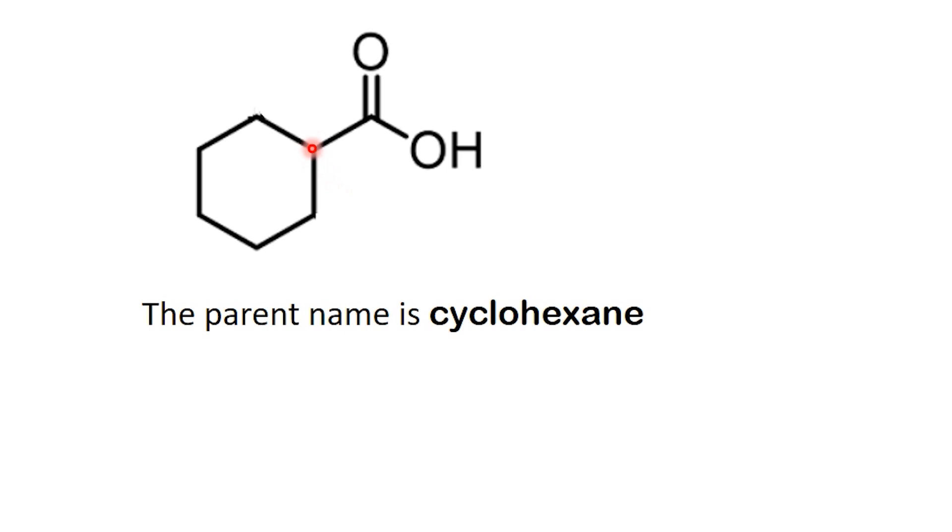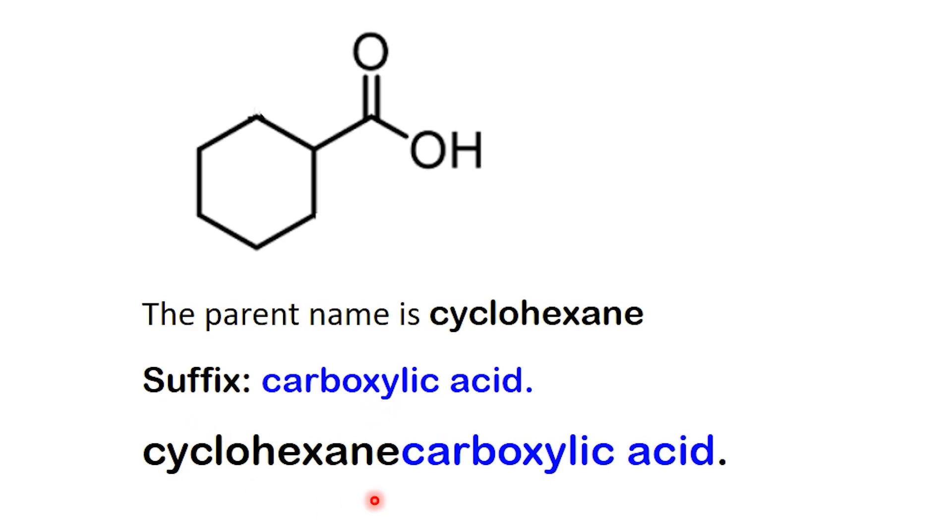The carbon in the ring that carries the carboxyl group is automatically carbon-1. If there were other substituents, we would number around the ring to assign their positions. And here's the key difference. Instead of adding oic acid, as we do with straight chains, we add the suffix carboxylic acid. Putting it all together, the correct name for this molecule is cyclohexane carboxylic acid.